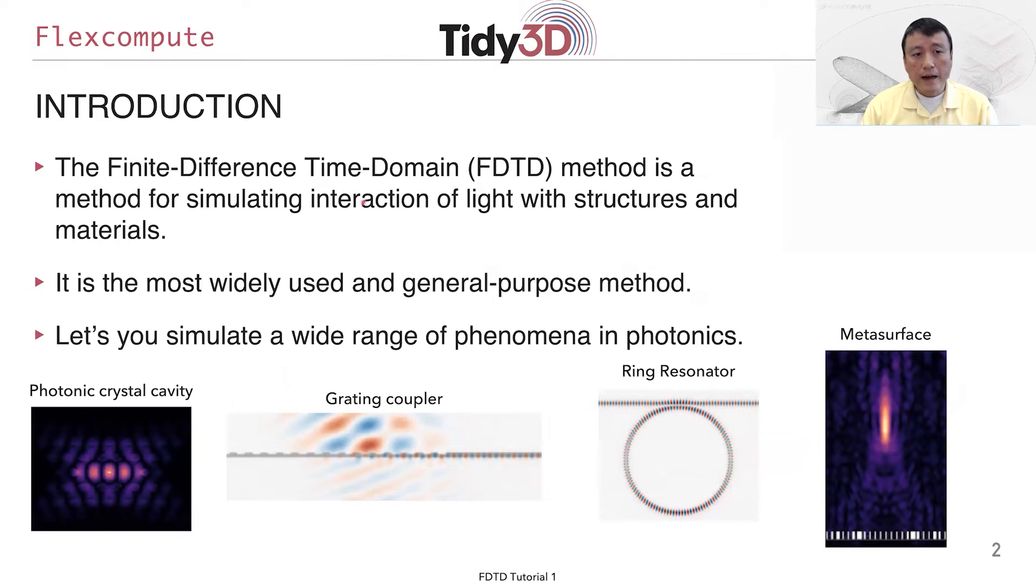So the finite difference time domain method, or FDTD, is a method for simulating interaction of light with structures and materials. It is really the most widely used and general purpose method for solving Maxwell equation. And it's very widely used in photonics and electromagnetics.